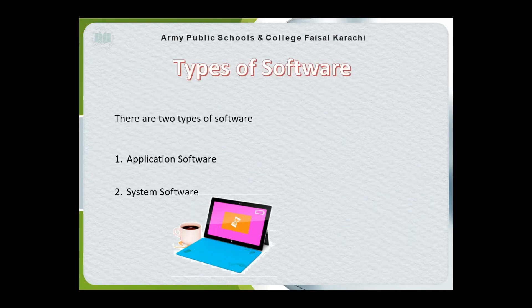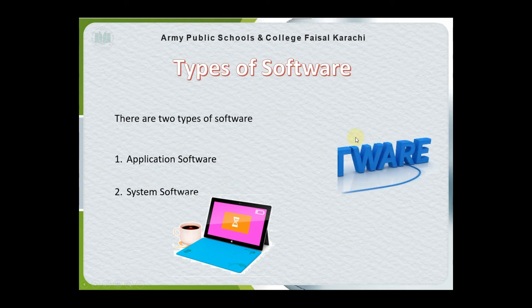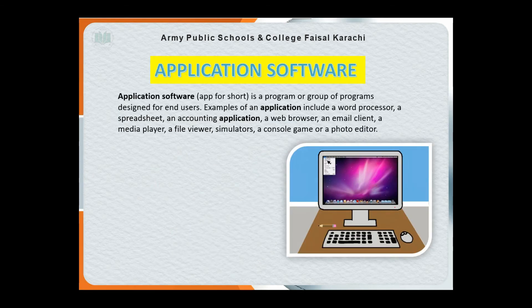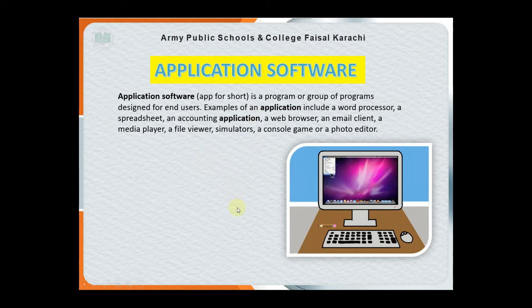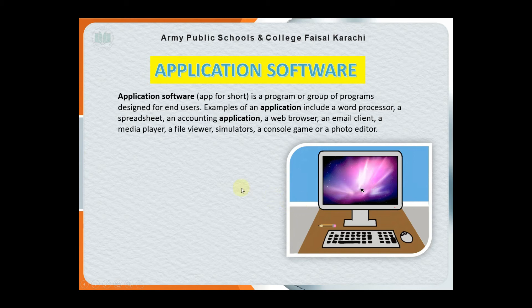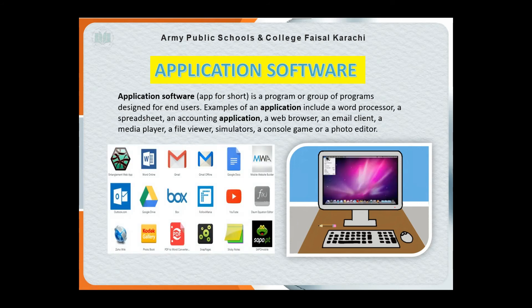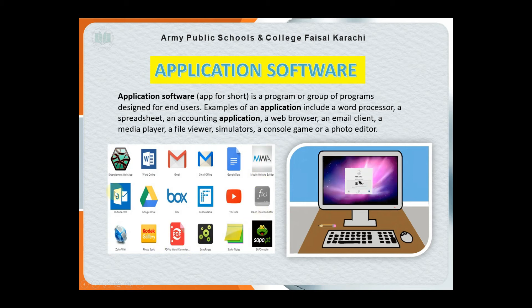There are two types of software: application software and system software. Application software — we can call it 'app' for short — is a program or group of programs designed for end users, which means you. Examples include a word processor, spreadsheet, an accounting application, a web browser, an email client, a media player, a file viewer, simulators, console games, or a photo editor. As you can see in the picture, there are multiple programs which are all application software.